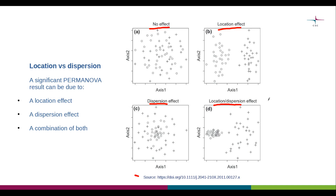On the bottom right we have a scenario involving both a location and a dispersion effect. The two groups are separated in terms of where they are located in the ordination space, and the group on the left denoted by circles shows much less within-sample variation than the other group. Running PERMANOVA on its own cannot distinguish between location and dispersion effects, which is why it is often accompanied by PERMDISP. Using those two tests together makes it possible to infer whether a significant PERMANOVA result is due to location effects, dispersion effects, or a mix of both.